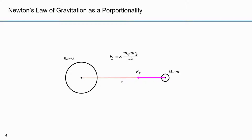Newton's third law states that for every action there's an equal and opposite reaction. If the earth applies a force on the moon, then the moon must apply an equal and opposite force on the earth. If F sub g is the force exerted by the earth on the moon, then minus F sub g would be the force exerted by the moon on the earth. The main point is that Newton suggested these forces were proportional to the product of the masses and inversely proportional to the distance between their centers.